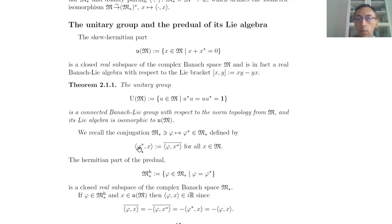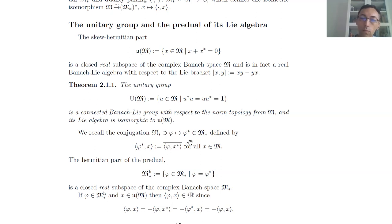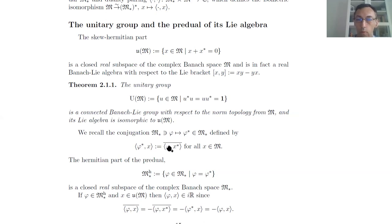We can define the adjoint of any such functional: for any functional phi, we define its adjoint as the value of phi on x-star, and then we take the complex conjugate. By this composition of two anti-linear maps we obtain again a linear functional. It is then natural to define the Hermitian part of the predual as the set of all functionals that are equal to their own adjoint — in other words, applying the functional to the adjoint of an element is the same as taking the complex conjugate of the value phi on x. This is a real subspace of the complex Banach space, that is the predual of M.